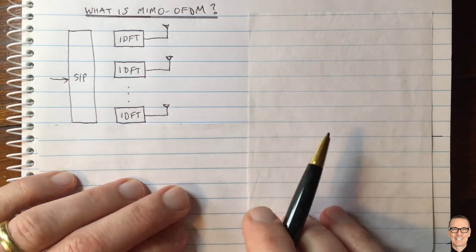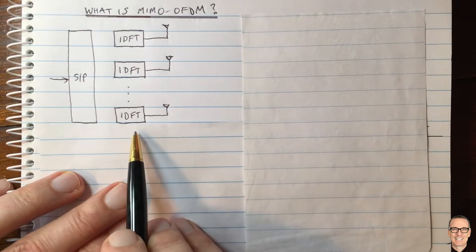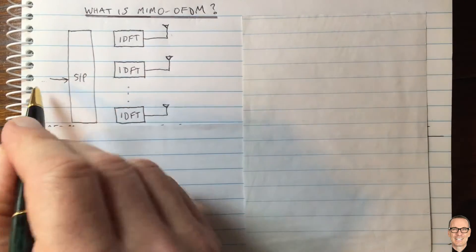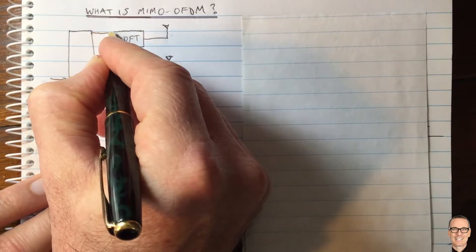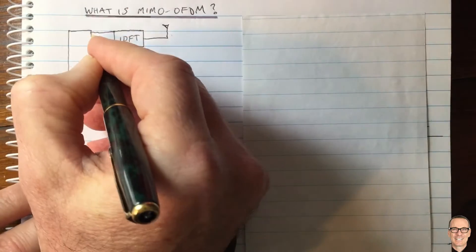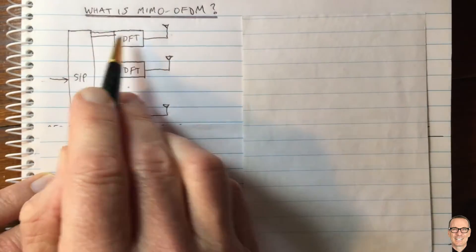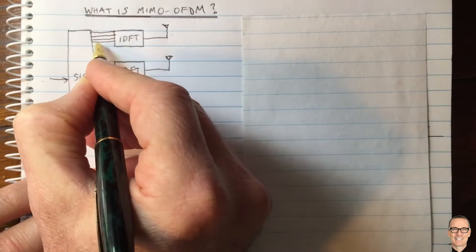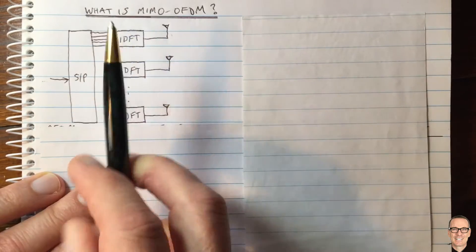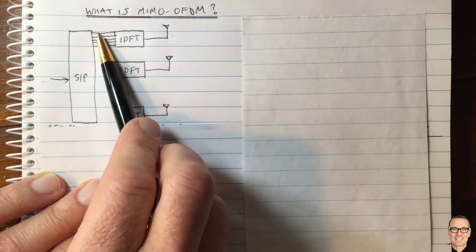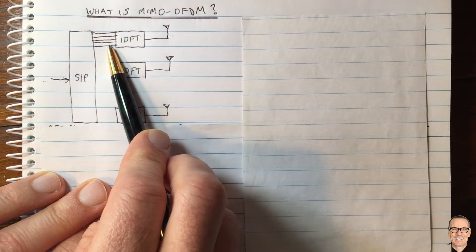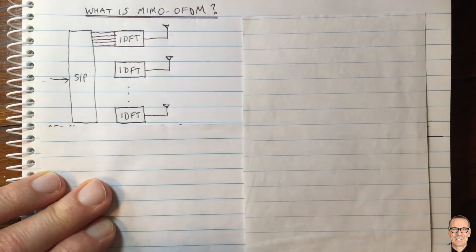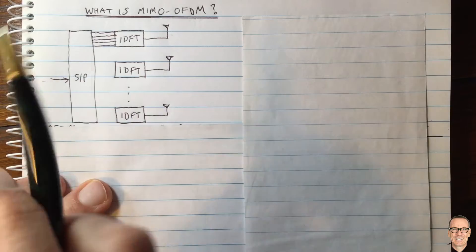The serial-to-parallel block takes the input data stream and puts the first bit of data on the first subcarrier for the first antenna, then the next bit on the next subcarrier for the next antenna. The lines going into the IDFT indicate the subcarriers in the OFDM block, which takes in parallel data and converts it into a time-domain serial signal.